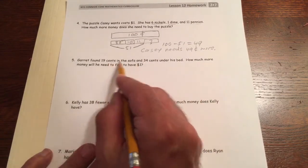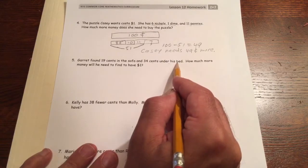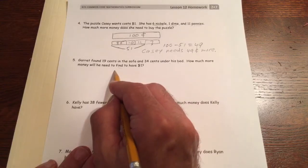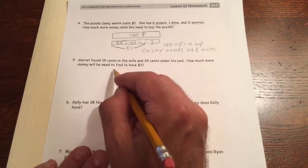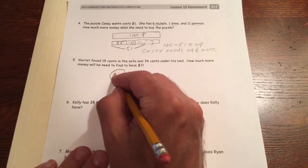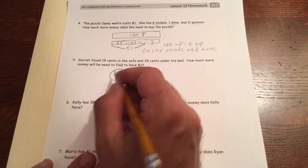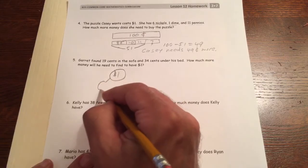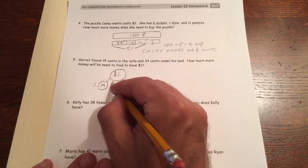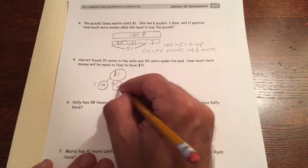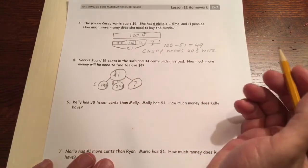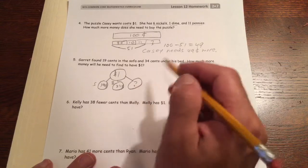Garrett found 19 cents in the sofa and 34 cents under his bed. How much more money will he need to find to have a dollar? Let's use a number bond for this one just for a little variety. He needs to have a dollar, which is the same as 100 cents. In his sofa he found 19 cents, under his bed 34 cents.